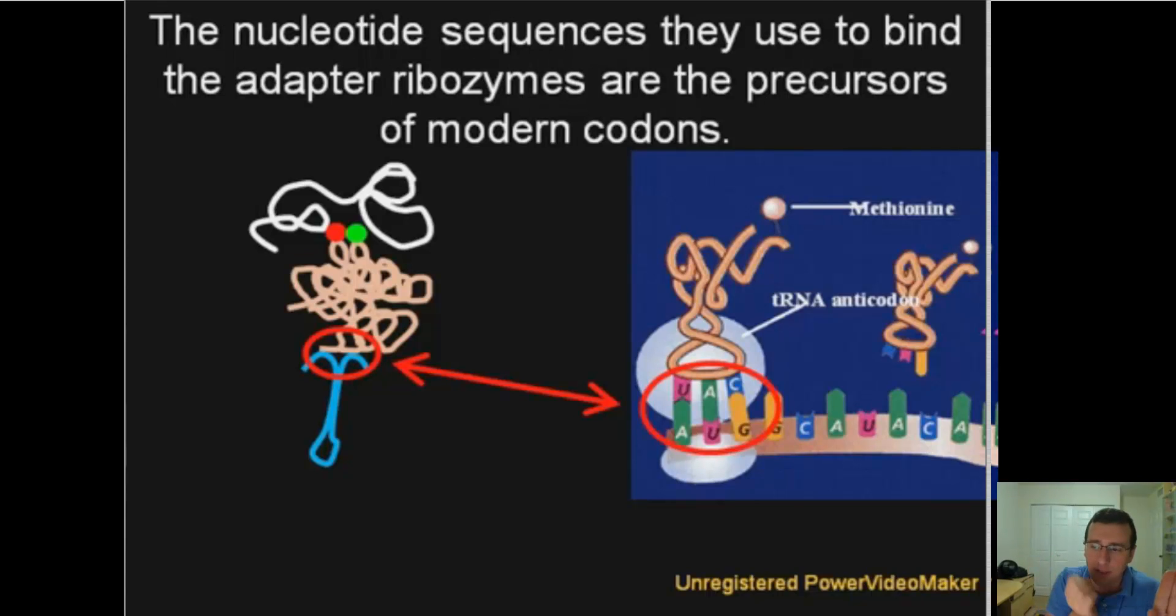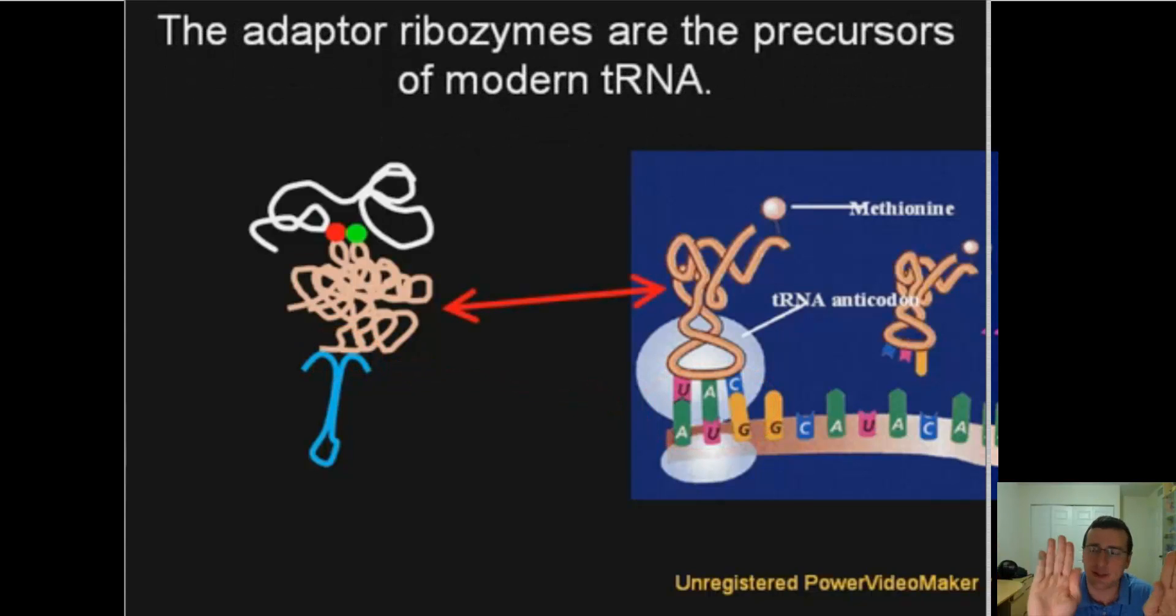That is the precursor to the early codons that we have today, just like the structural RNA would be the precursor to today's modern mRNA. Ribozymes carrying the appropriate amino acids are the precursors of modern transfer RNA, which is carrying the amino acids today.